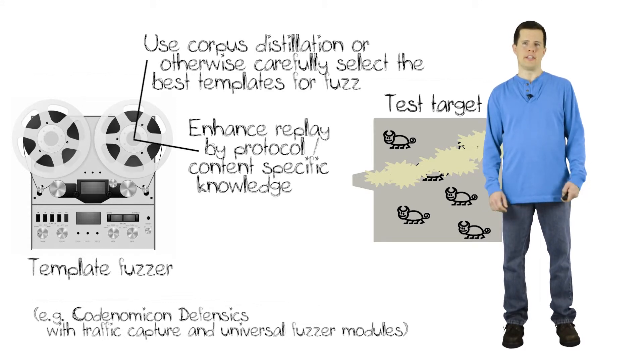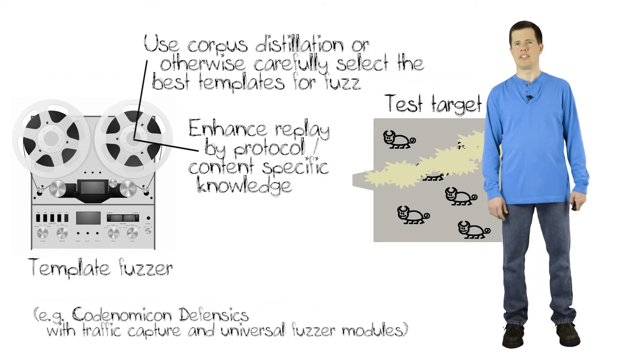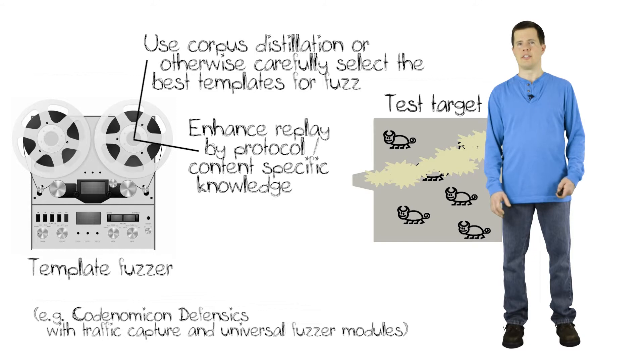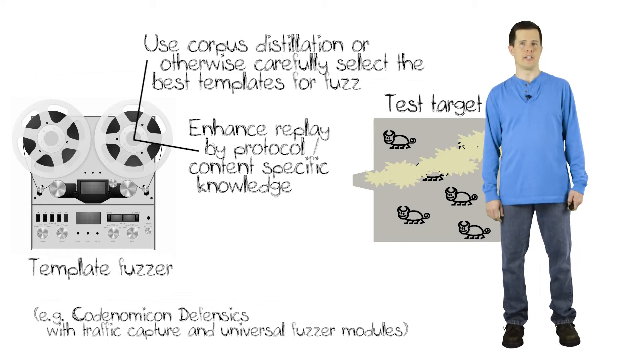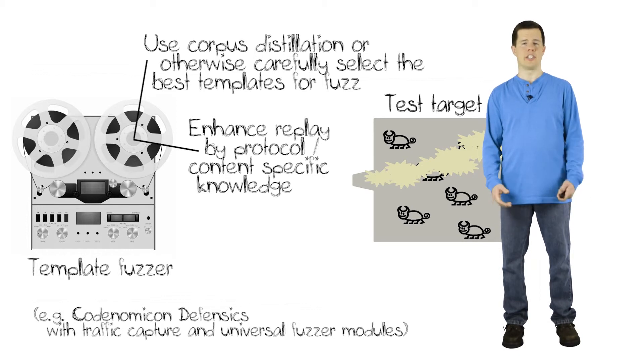Also, the template fuzzer is just kind of blindly replaying this recording. So if your protocol that you're testing has checksums on messages or it has stateful features like session IDs, the template fuzzer doesn't know anything about these and will not set those values correctly when the test cases go to the target. And this means that the target is likely to reject those messages or stop looking at them prematurely.